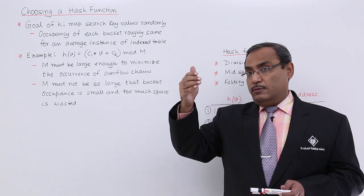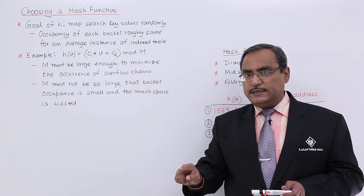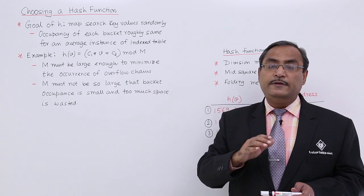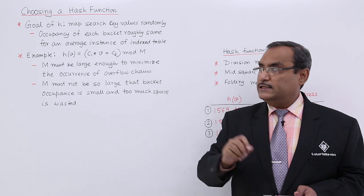That means in the buckets, the respective index entries must be evenly distributed so that we can reduce the number of overflow chains.